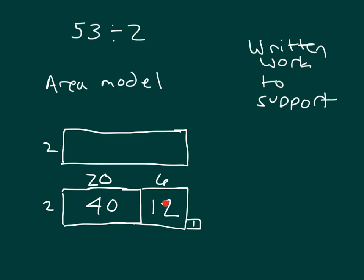So the area here is the same as here. 40 and 12 is 52, and our remainder is 1. Our missing side here is 20 and 6 put together, which is 26, which is also our quotient. So 53 divided by 2 is 26, with that remainder of 1. Remember, these are square units here because we are talking about area, just as both of these would be square units as well, even the 1 there.